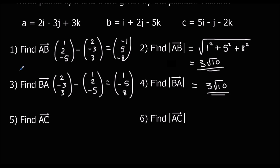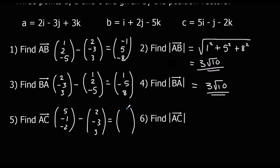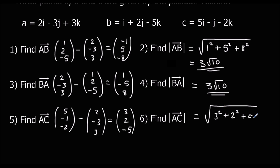And finally, a to c. So a to c is going to be c take away a. So (5, minus 1, minus 2) take away (2, minus 3, 3). 5 take away 2 is 3; negative 1 take away negative 3 is 2; and negative 2 take away 3 is negative 5. So to go from a to c, we add 3 to x, add 2 to y, and take 5 from z. The modulus of a to c: square root of 3 squared plus 2 squared plus 5 squared, and that's root 38.